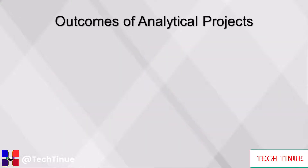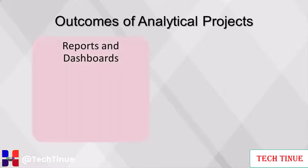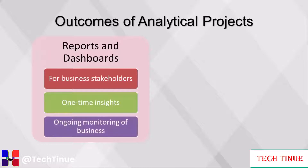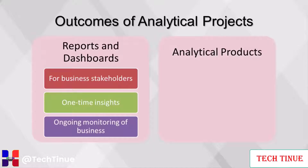There are many different goals that an analytics project can strive for, typically fitting into one of two categories. The first is providing information about a business, such as reports and dashboards, for business stakeholders. Reports or presentations provide one-time insights to explain events that have occurred and predict future events, while dashboards are used by stakeholders for ongoing monitoring of key aspects of the business. The second category is the production of analytical products, where the business's data becomes the input for a complex process that automatically produces an action.